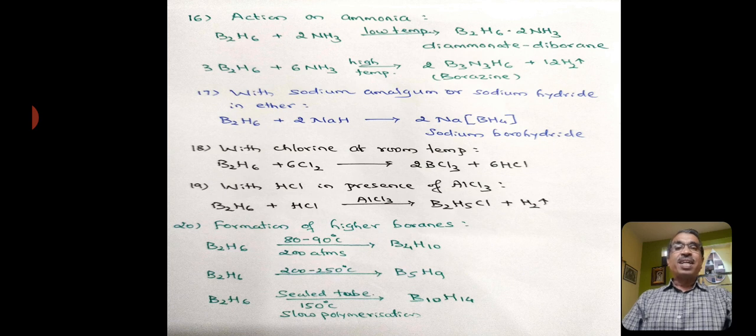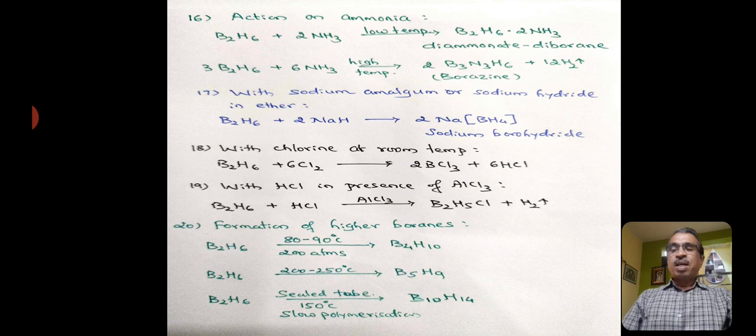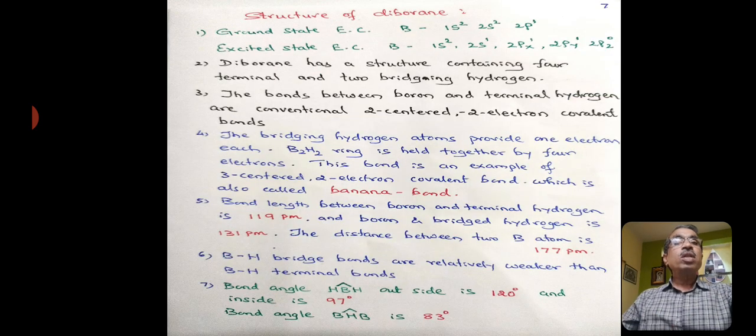Diborane forms higher boranes at different conditions. Around 80 to 90 degrees centigrade at 200 atmospheric pressure, it forms tetraborane with the formula BnHn plus 6. Diborane also forms B5H9 at a temperature of 200 to 250 degrees centigrade. In a sealed tube around 150 degrees centigrade, it undergoes slow polymerization to form decaborane, formula B10H14.